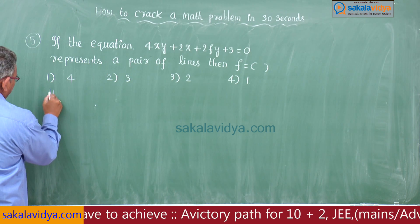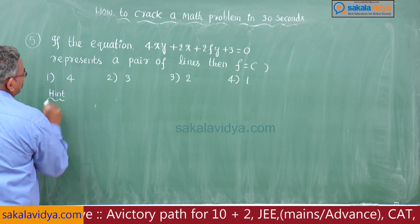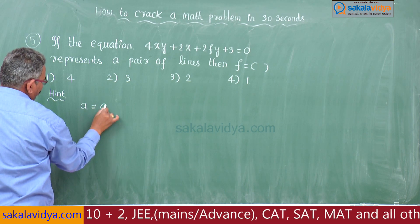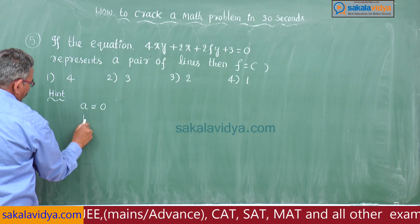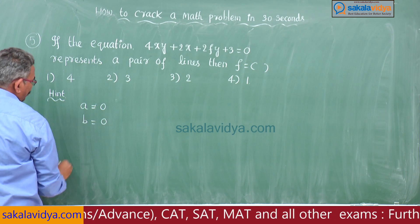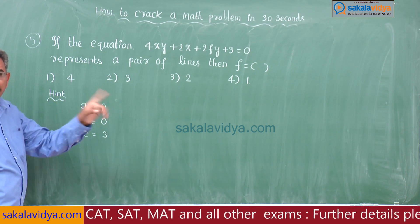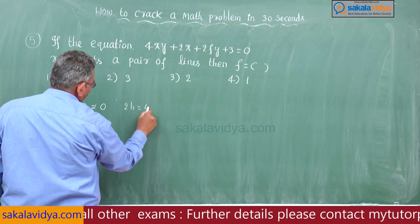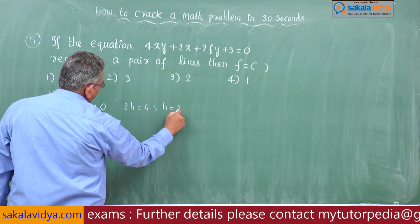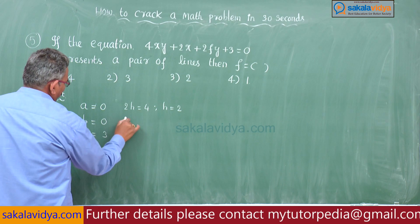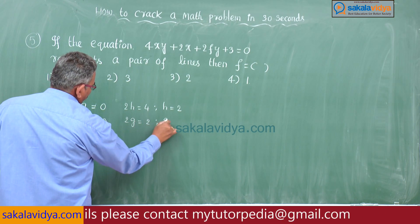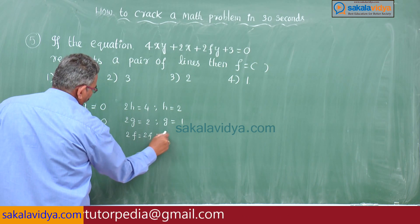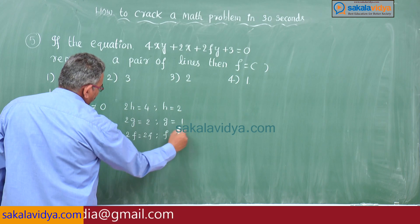Here, in this problem, first let us identify the values. The x² coefficient is absent, so a = 0. The y² coefficient is also absent, so b = 0. The constant c = 3. Now, 2h = 4, so h = 2. Also, 2g = 2, so g = 1, and 2f = 2f, so f = f (the unknown value).